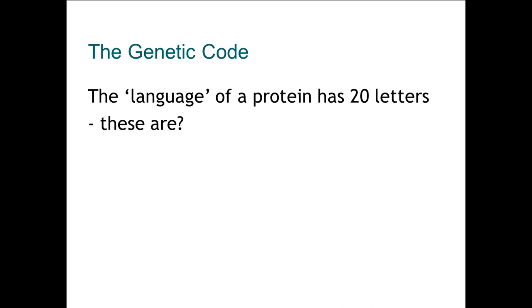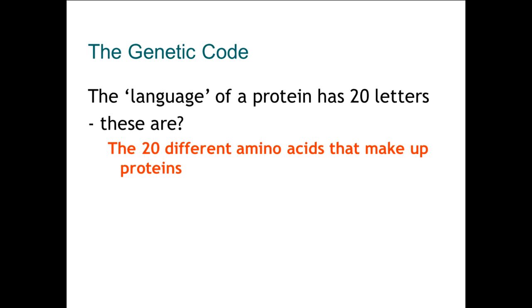Proteins are made of a chemical called amino acids, so lots of amino acids put together form a protein. Some proteins, dependent on the function, can be quite small — several hundred amino acids long — whereas others can be much more complex and much longer, running to several thousand or tens of thousands of amino acids long.